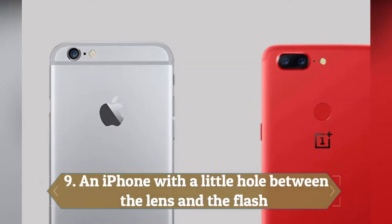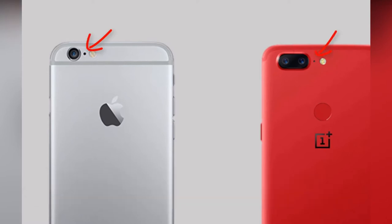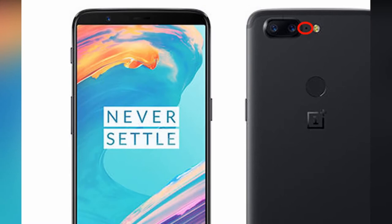Number 9. An iPhone with a little hole between the lens and the flash. You may have noticed the little hole between the flash and the lens on an iPhone and wondered what it was for. Actually, it's a secondary microphone. The iPhone does indeed have three microphones.